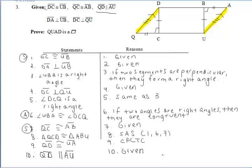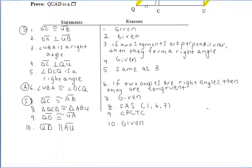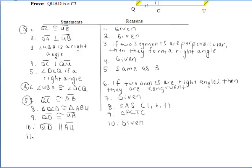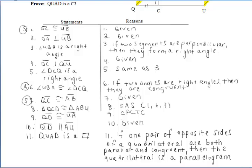But since in the given information they told us that sides QD and AU are parallel, what we have now is one pair of opposite sides of the quadrilateral that are both parallel and congruent to each other. So that's enough to say that that quadrilateral is a parallelogram. And that is the third method that we reviewed on the first page, which states that if one pair of opposite sides of a quadrilateral are both parallel and congruent, then the quadrilateral is a parallelogram.